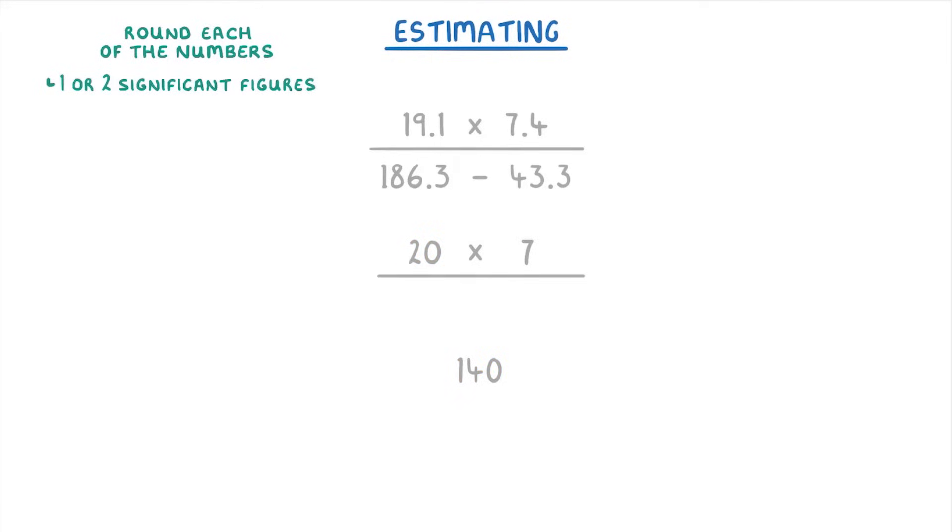Then for the denominator, we could round 186.3 up to 190, and 43.3 down to 40. So that we have 190 minus 40, which is 150. Then to work that out, we could simplify the fraction by dividing top and bottom by 10 to get 14 over 15, and then that is around about 1. So in the exam, you could just say that the answer is 1.